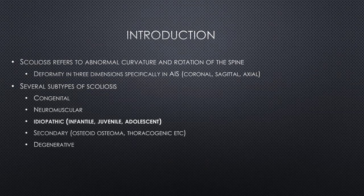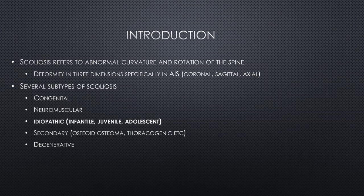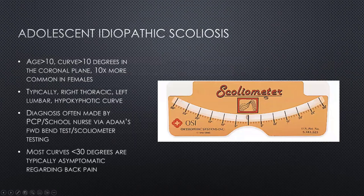This three-dimensional nature is one of the hallmark features of AIS, in comparison to degenerative or adult type scoliosis. Other subtypes include congenital, neuromuscular, and the family of idiopathic scoliosis which has three subtypes: infantile, juvenile, and adolescent, which we're focusing on today. Secondary scoliosis can occur due to other processes such as tumor, post-cardiac surgery, and degenerative scoliosis in the adult population.